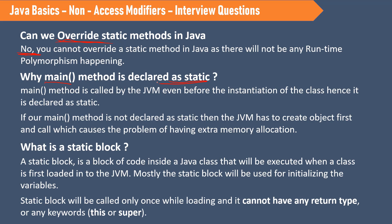If the main method is not declared as static, then JVM has to create an object first and call that object to execute the main method. This involves extra memory allocation. That's why we always declare the main method as static.